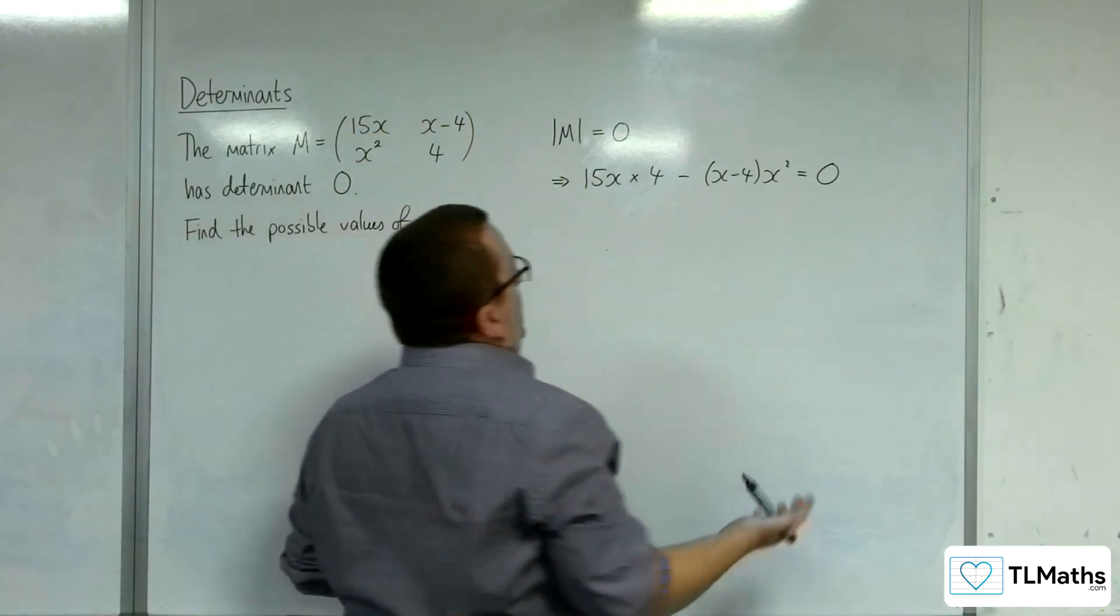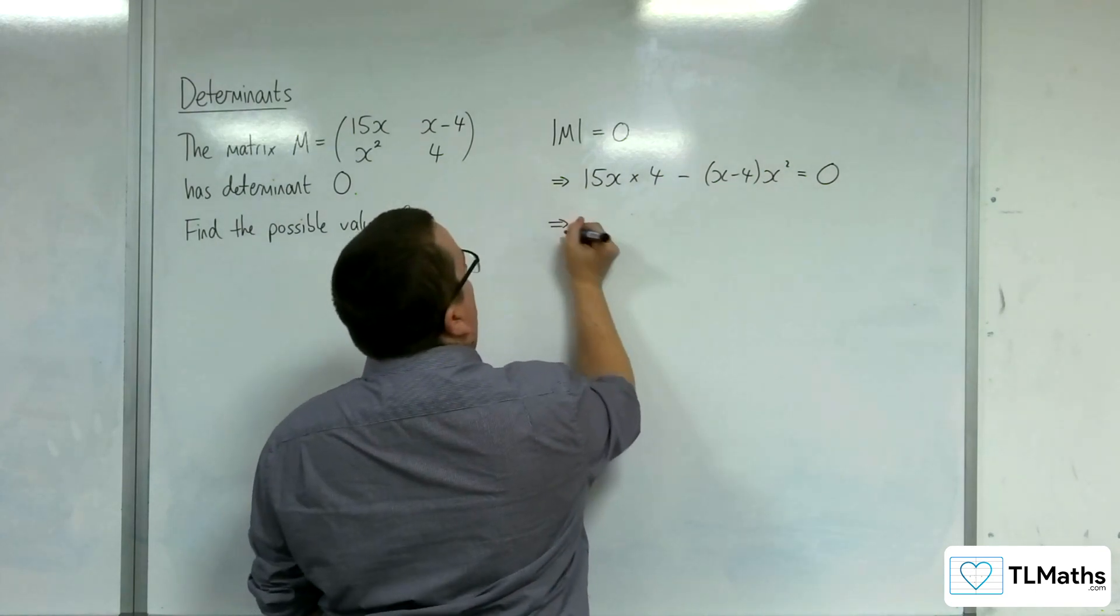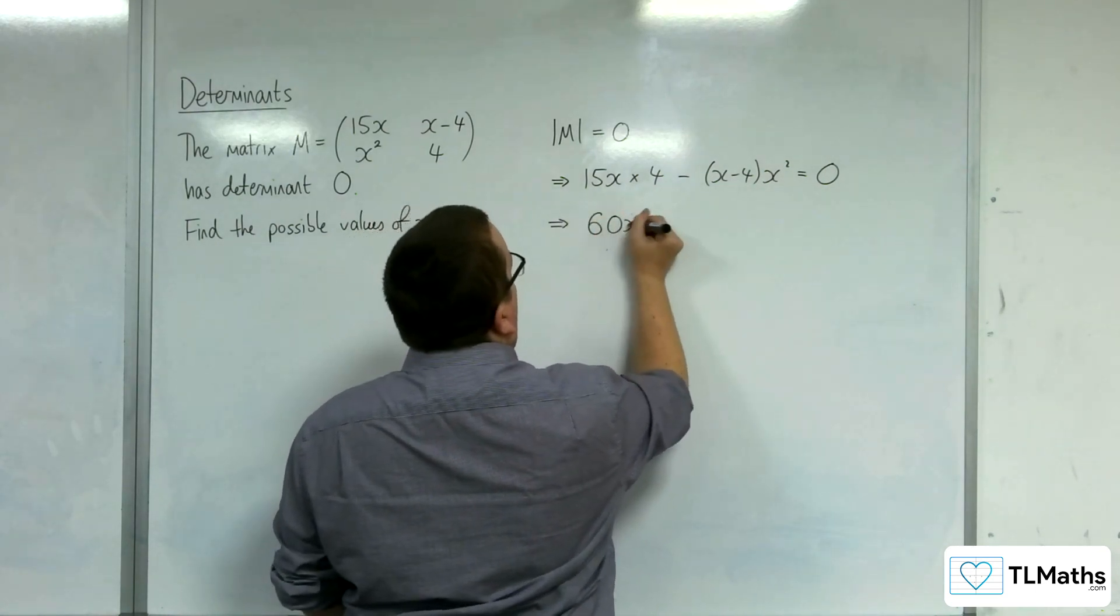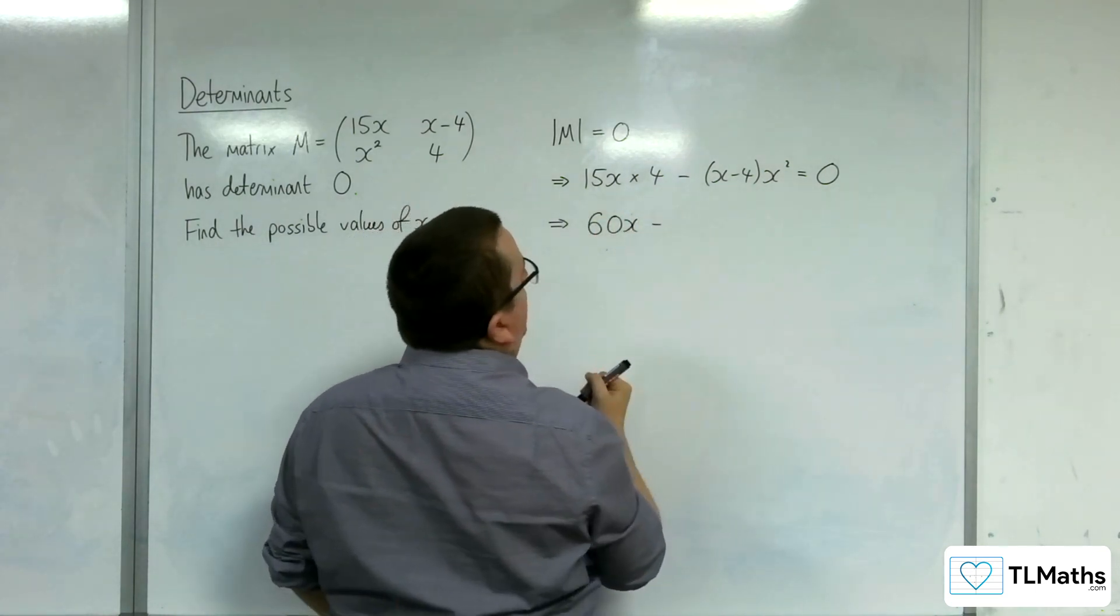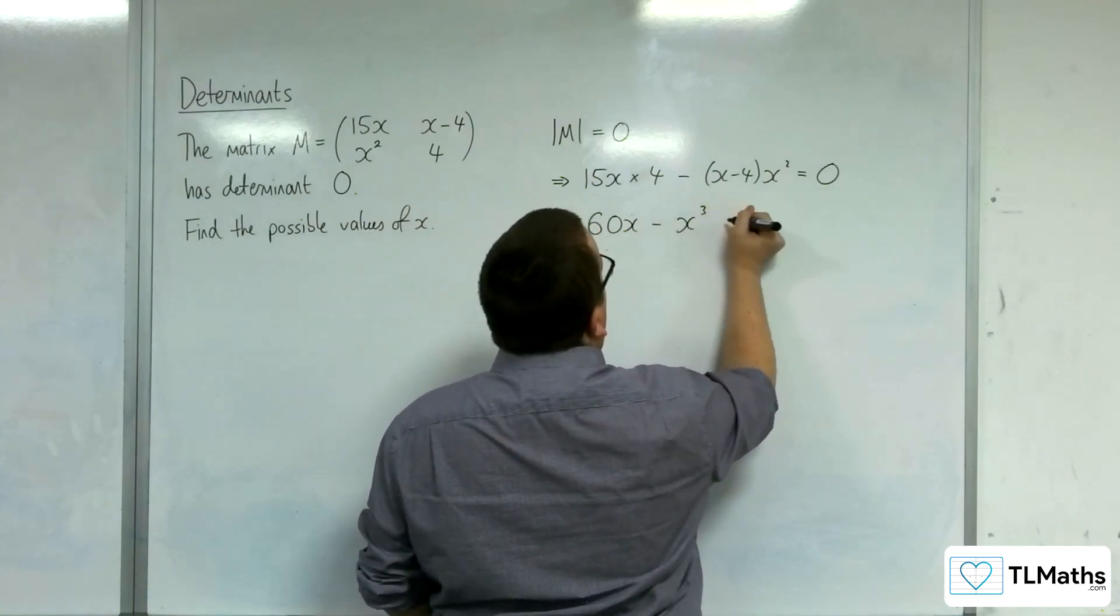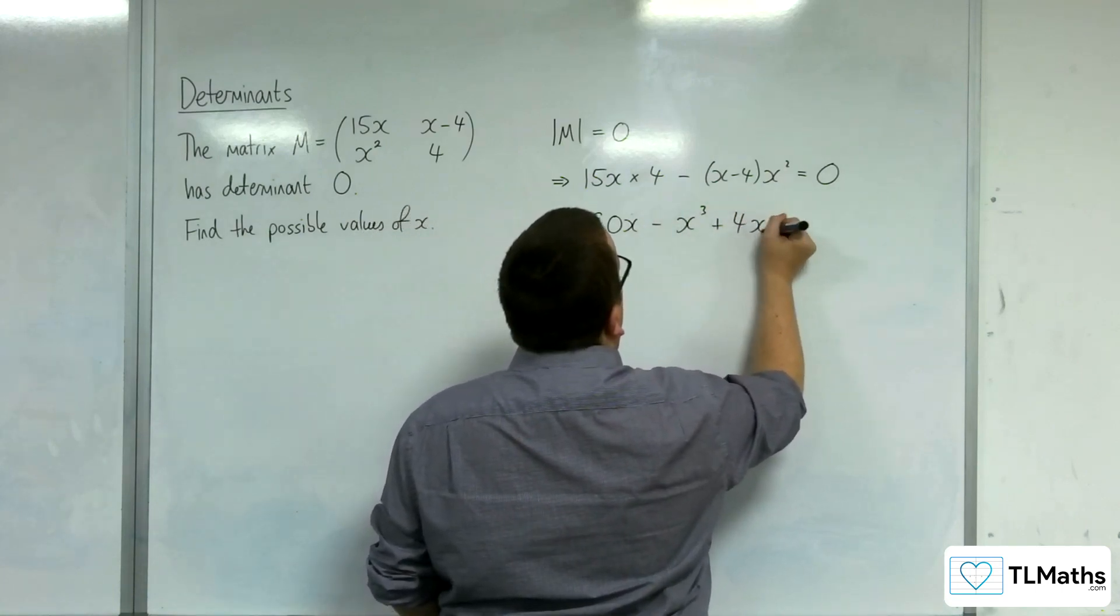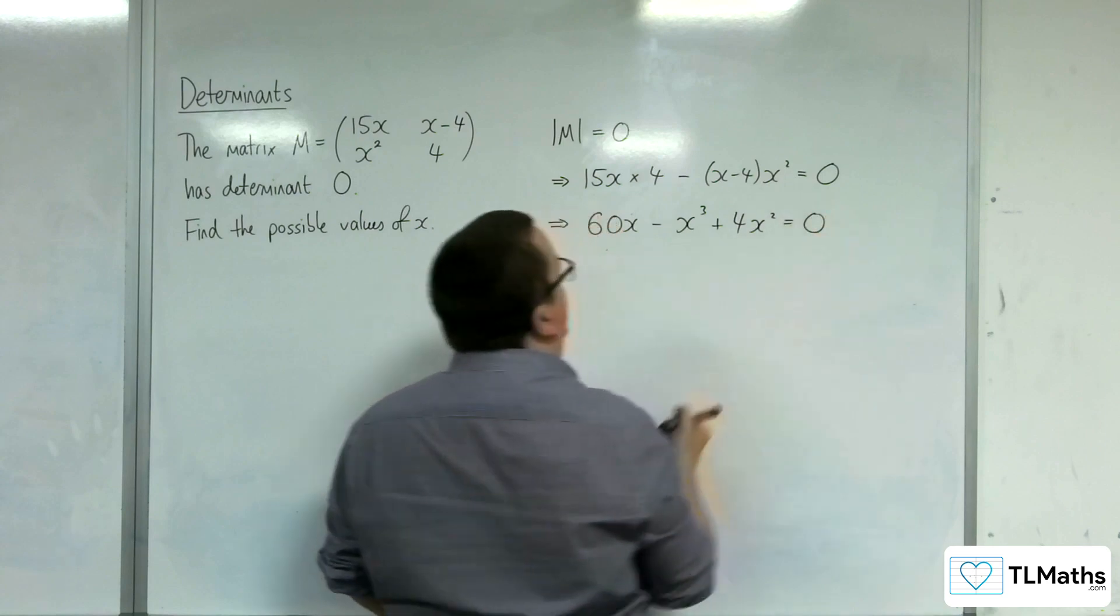So this gives us an equation to solve. We have 60x take away, expanding this out, x cubed plus 4x squared is equal to 0.